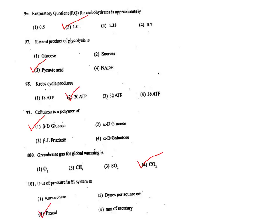Q98. Krebs cycle produces — in the Krebs cycle (citric acid cycle), 30 ATP molecules are produced. The correct answer is option 2.